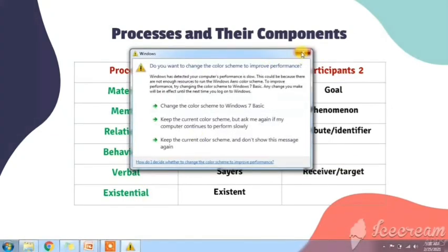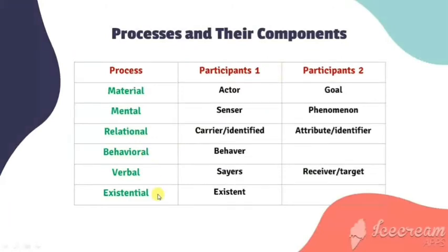In existential process, like behavioral, only one participant is required, called existence. So, each participant's label depends on which process it goes through — for example, if the process is material, the participants are called actor or goal; if mental, they are called sensor or phenomenon, and so on.